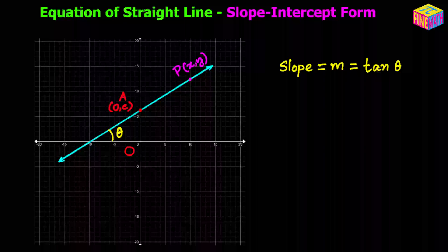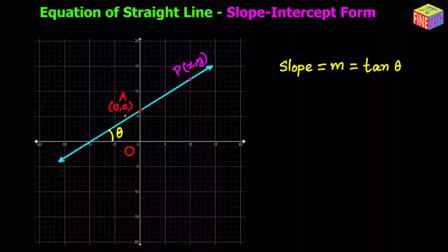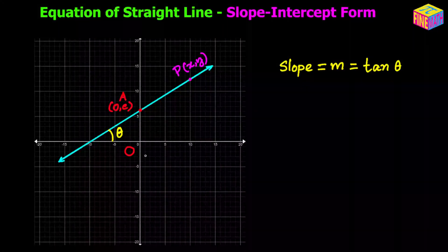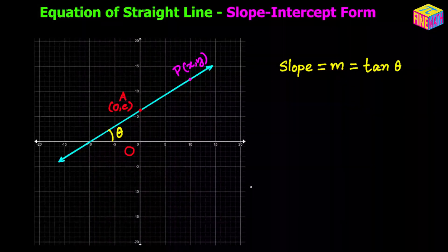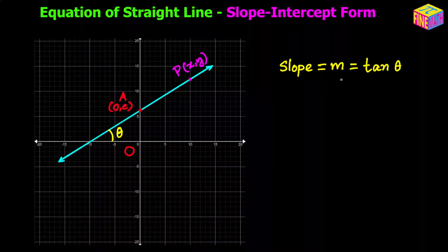Let's assume that we have a straight line — the light blue color line on this diagram — and let's assume that the y-intercept for this straight line is c units. The point where this straight line cuts the y-axis, let's call it point A. Let's also assume that the angle this straight line makes with the positive x-axis is theta. Then the slope will be tangent of theta, and we denote slope as lowercase m. So m is equal to tangent of theta.